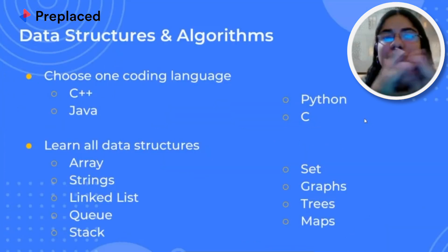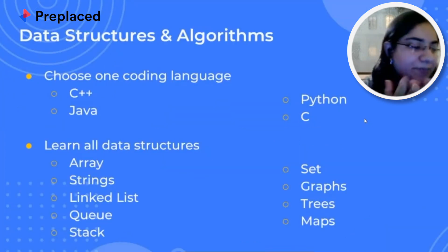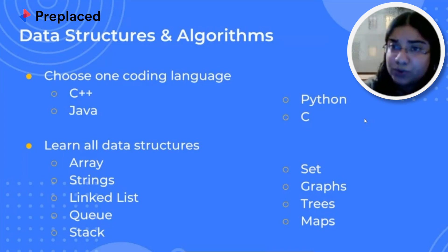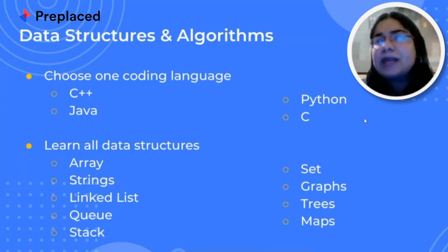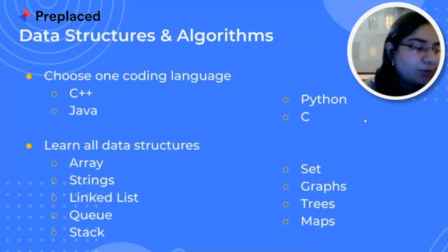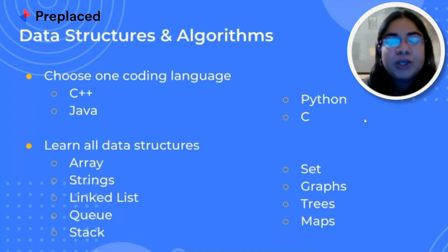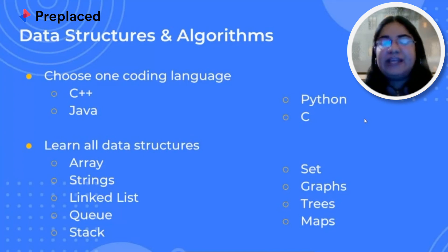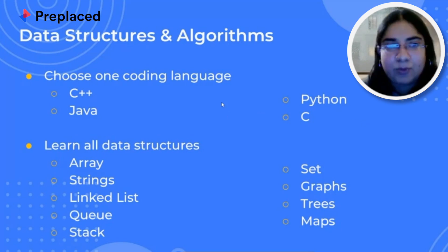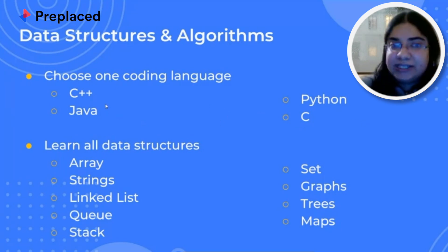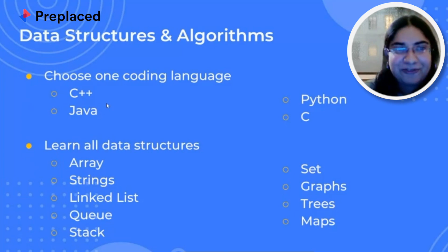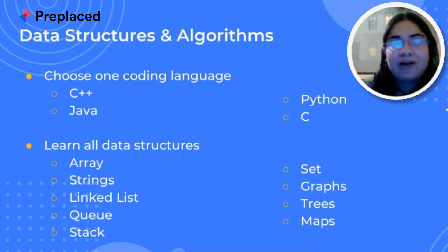So how do you prepare? I'm assuming there are some people who know stuff, and there might be some freshers — I saw someone from first year also. So if you are very new, what you can do is basically choose one coding language. I've written C++ first because that's my preference, my personal bias. You can select C++,